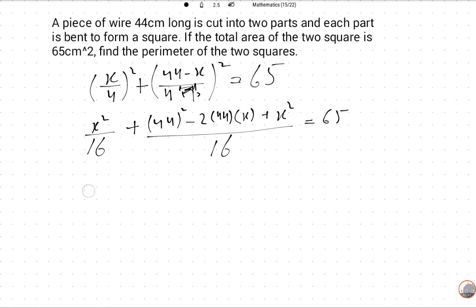So we will take LCM. x² + 1936 - 88x + x² is equal to 65.